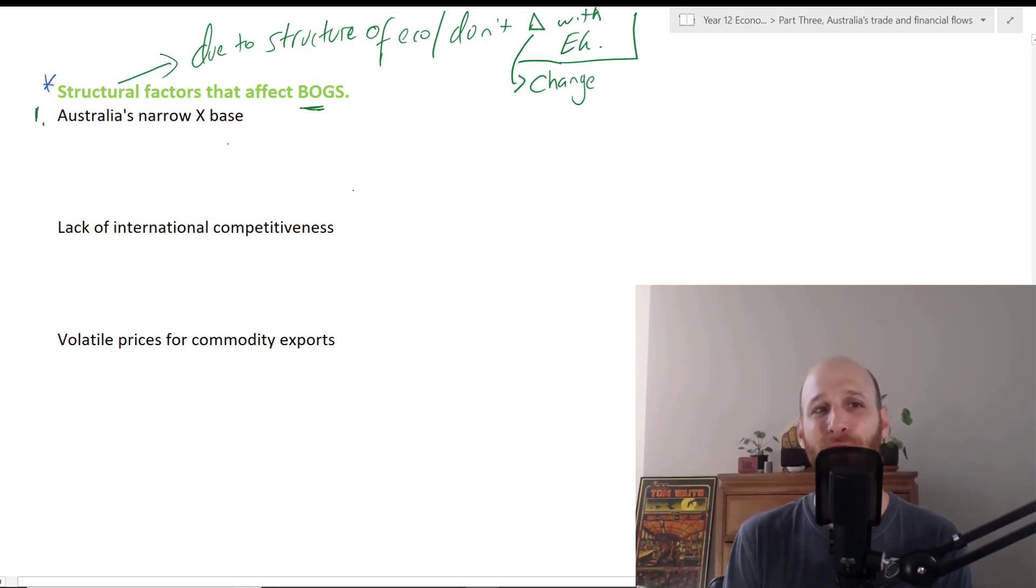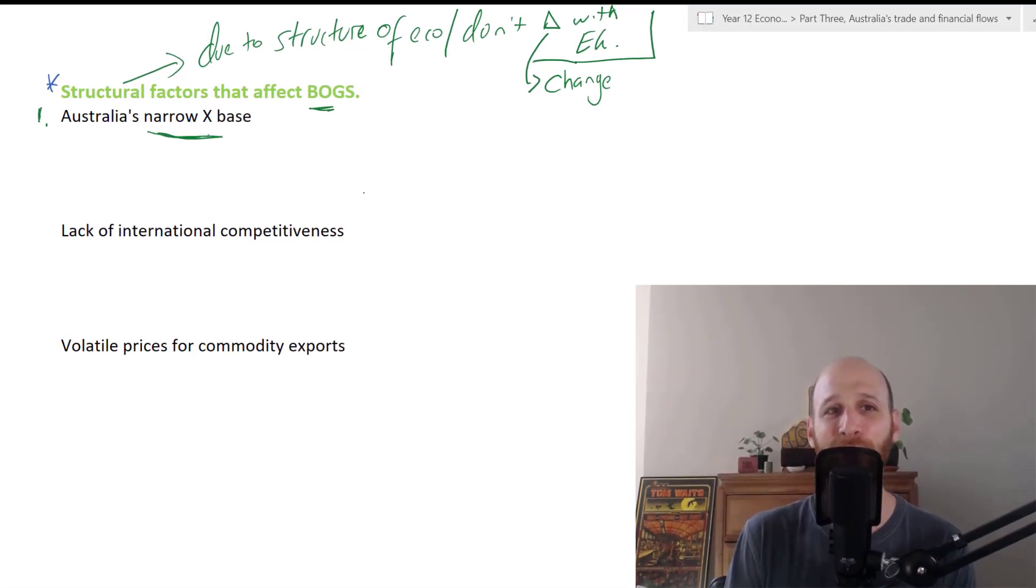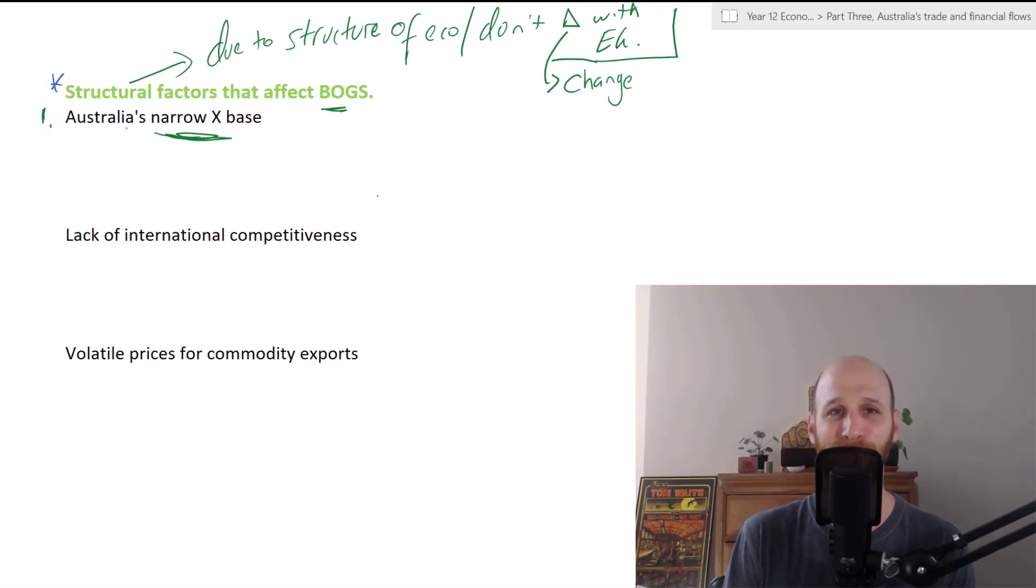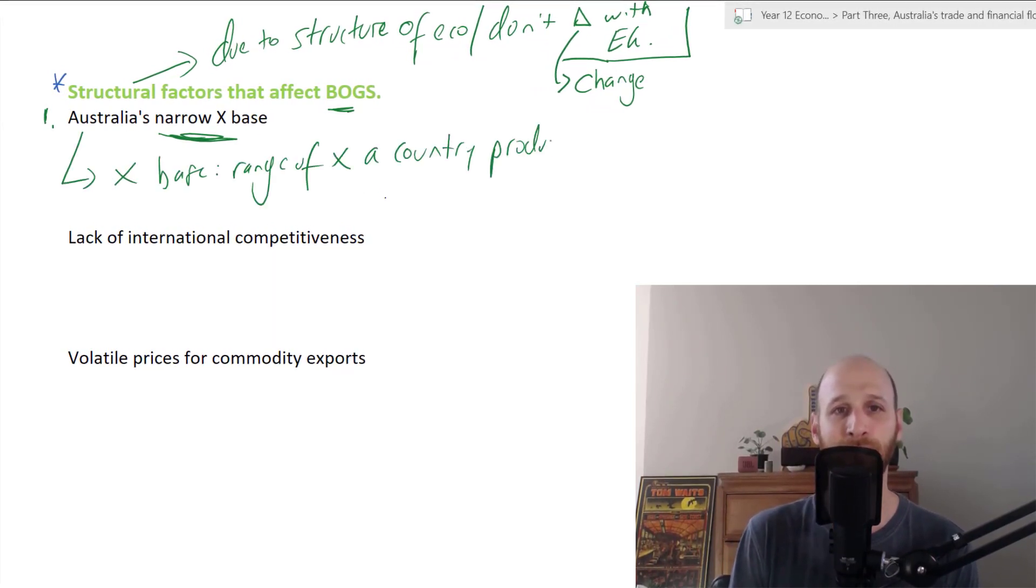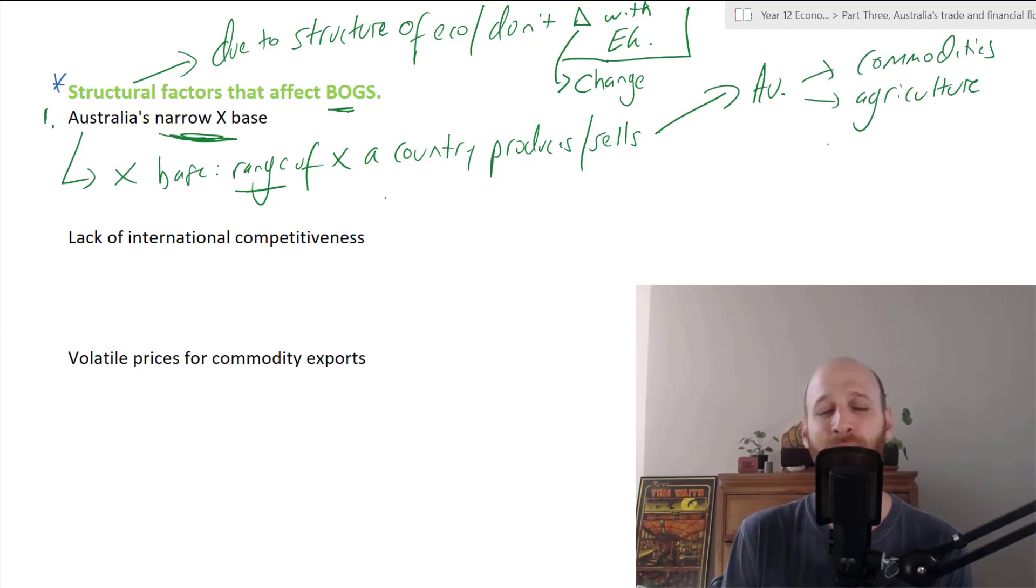So let's have a look at the structural factors that affect BOGS. We can number these. The first one is what's known as Australia's narrow export base. Export base refers to the range of exports that a country produces and sells on world markets. If we narrow down to Australia, Australia's main exports tend to fall into the categories of commodities and agriculture.